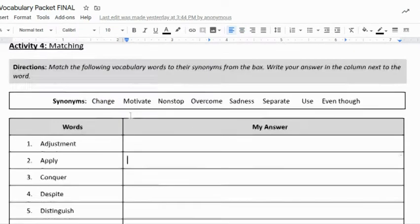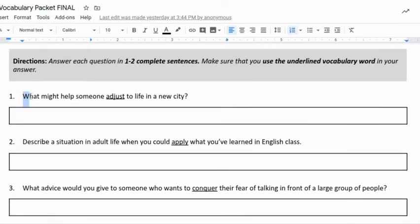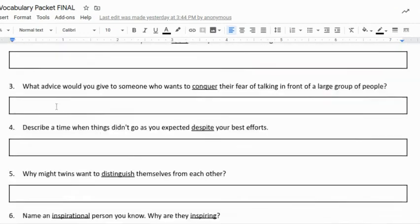Finally, activity five: application of vocabulary. So taking these just from vocab to the real world, answer each question in one to two complete sentences. Make sure that you use the underlined vocabulary word in your answer. So 'what might help someone adjust to life in a new city?' Make sure you restate the question. 'One thing that might help someone adjust to life in the new city could be' or 'is,' and then you give your answer. Do the same thing for these eight questions.